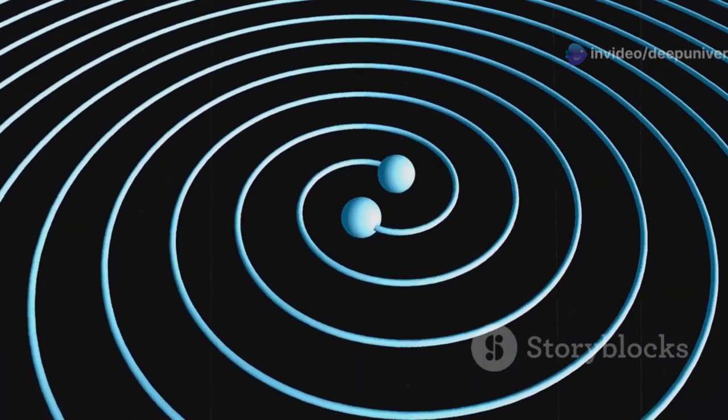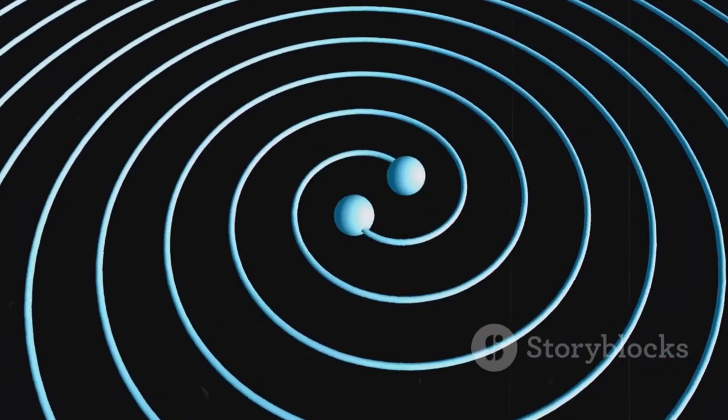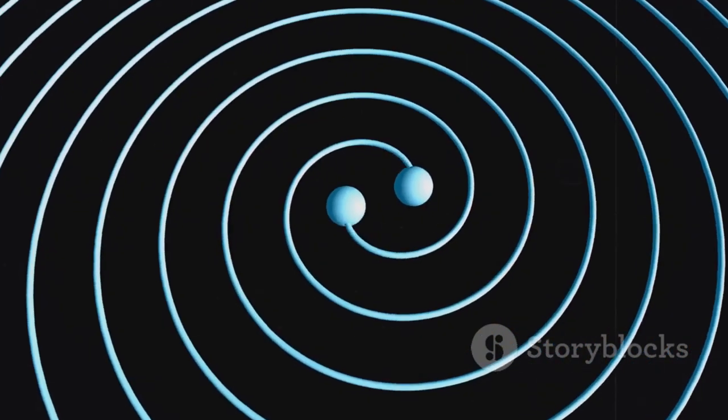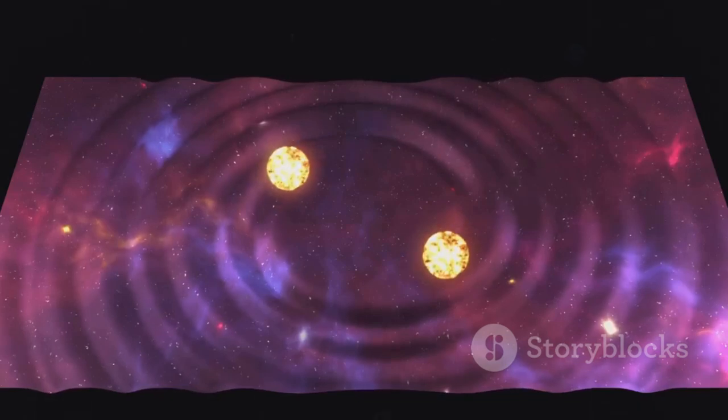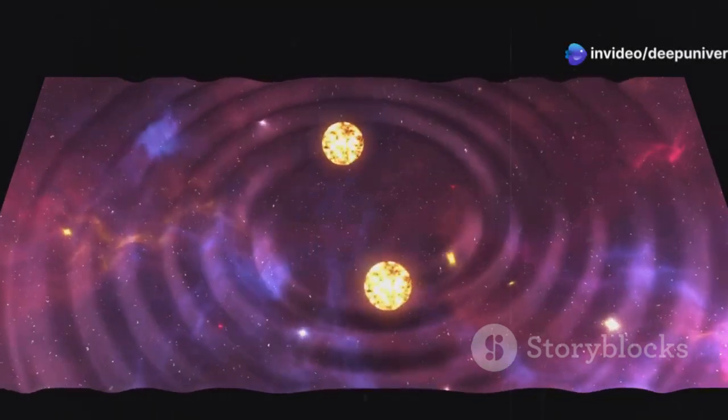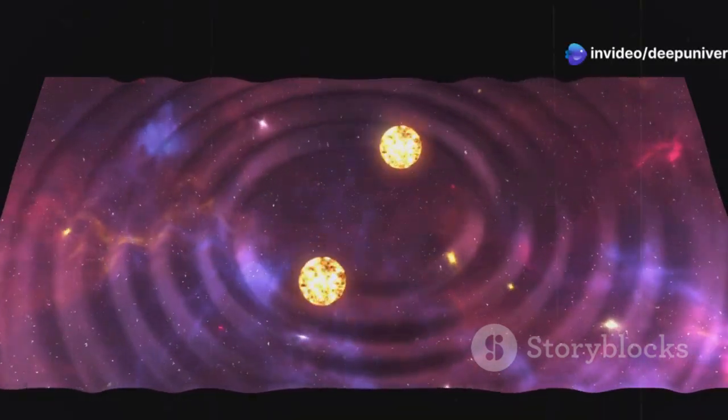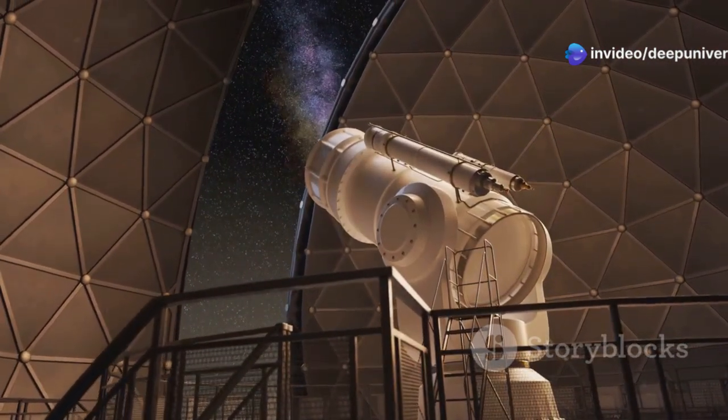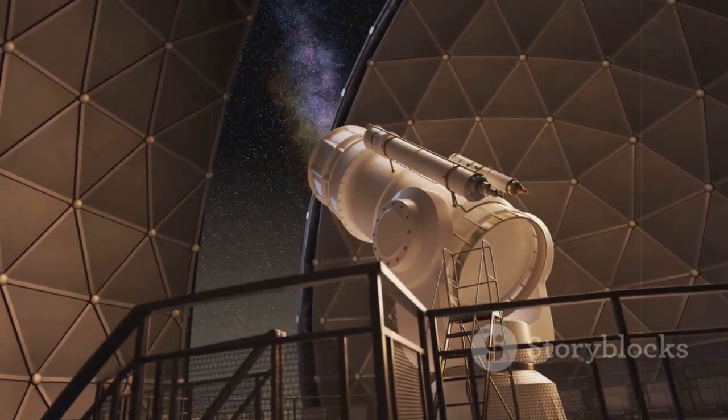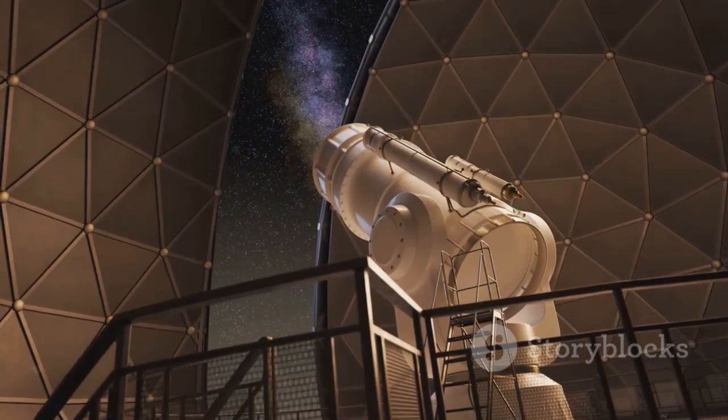One of the predictions of Einstein's theory was the existence of gravitational waves, ripples in space-time that travel at the speed of light. These waves carry information about the most violent events in the universe. These waves were directly detected for the first time in 2015, a century after Einstein's prediction.